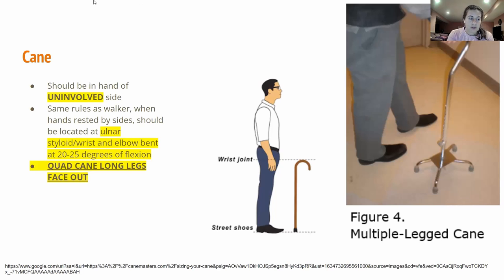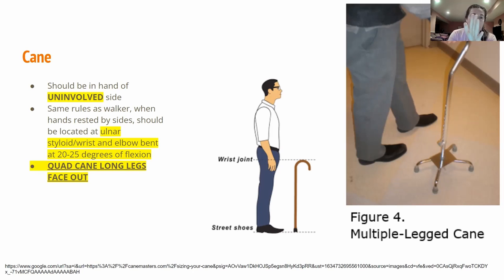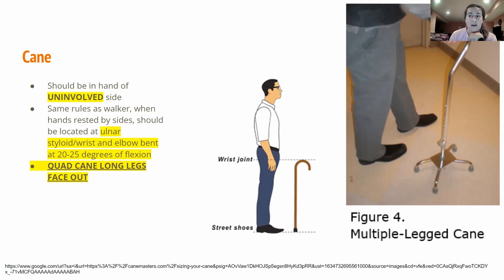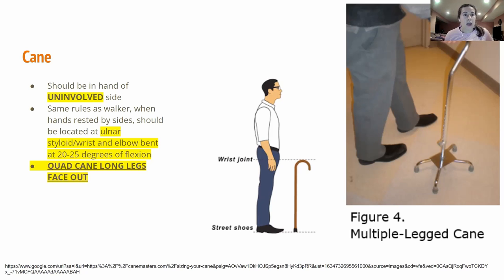For canes, the same ulnar styloid measurement applies with 20 to 25 degrees of elbow flexion. Importantly, the cane should be held on the uninvolved side — if the injury is on the right side, the cane goes on the left. You don't want the elbow or shoulder jammed up, and you don't want the patient leaning too far to the cane side, as that causes postural problems and can lead to weakness on one side.